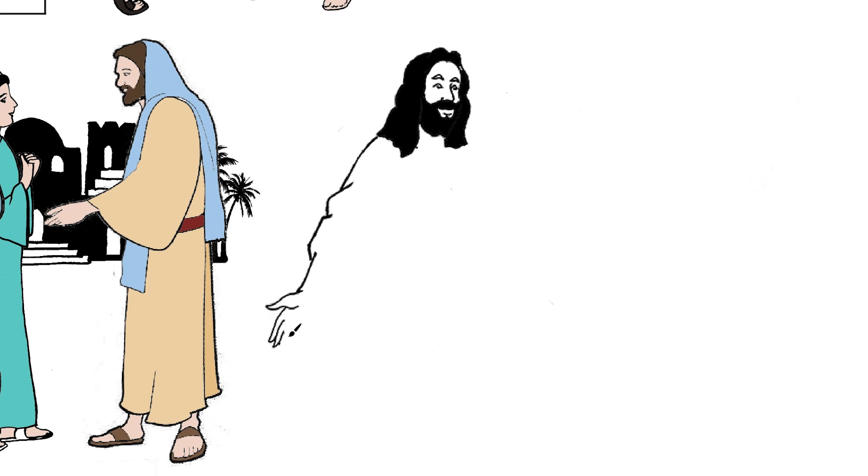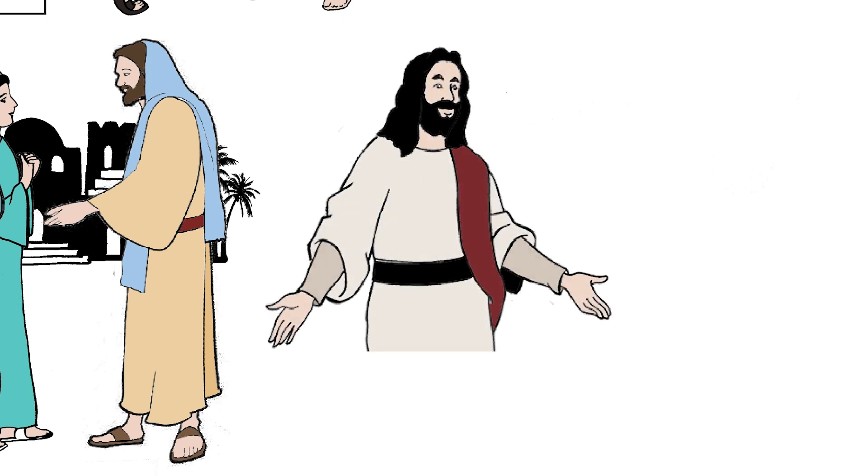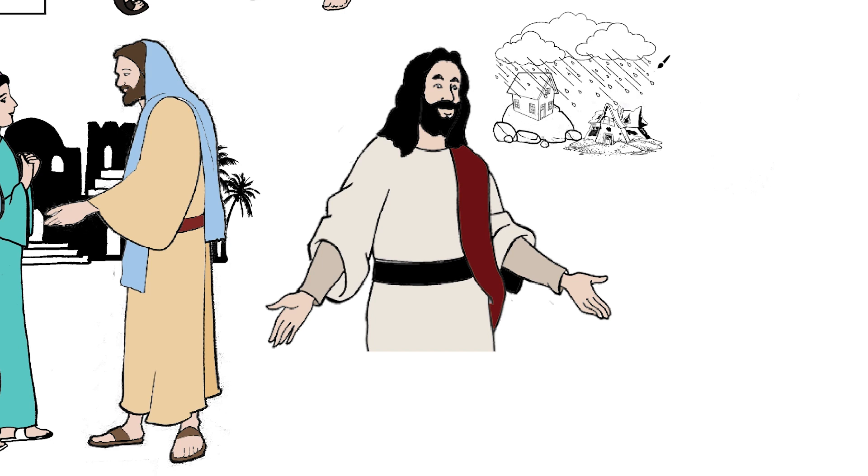Jesus said that everyone that heareth these sayings of mine, and doeth them, is like a wise man who built his house upon a rock. And those who heard them, but did not do them, were like a foolish man, who built his house on the sand. And when the rain descended, the floods came, and the winds blew, and beat upon the house, great was its fall.